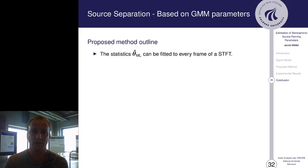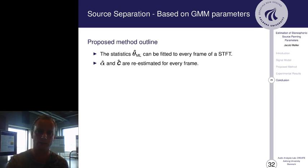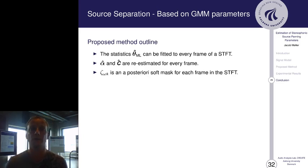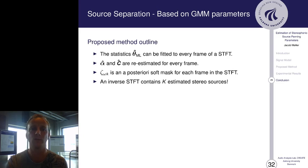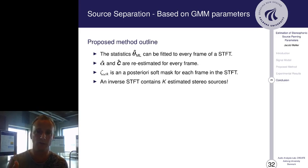So additionally to this, there's a source separation example, which is an extension of the ICASSP proposal. We propose to take the statistics that we have obtained from our method, where we have estimated the number of sources and the panning parameters. So we take these GMM components and fit them to every frame of a short-time Fourier transform. So we compute a short-time Fourier transform, and for every frame we re-estimate alpha and C. Then the zeta is a soft mask for each frame in that short-time Fourier transform to map out the different frequency components of the signal. And then run an inverse short-time Fourier transform. And that will give us the k-estimated stereo sources.